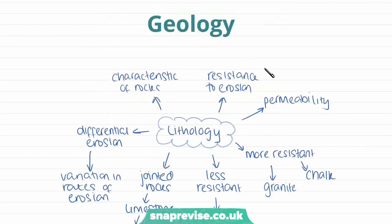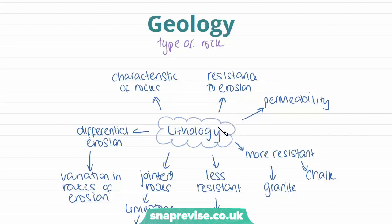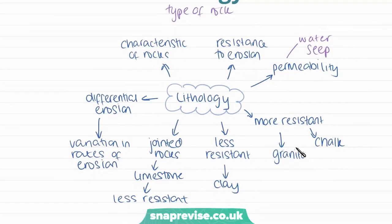The next factor in terms of marine erosion is the geology of an area — the characteristics or type of rocks within a specific coastal environment. This can also be referred to as lithology, where lithology relates to the characteristics of the rocks and geology more relates to the type of rock. Lithology affects resistance to erosion; if rocks are aligned in certain positions, this can make them more or less resistant. We also need to consider permeability — some rocks are more permeable than others, meaning more or less water can seep through. More resistant rocks include granite and chalk, whereas less resistant types such as clay dissolve readily and are less resistant to erosion.